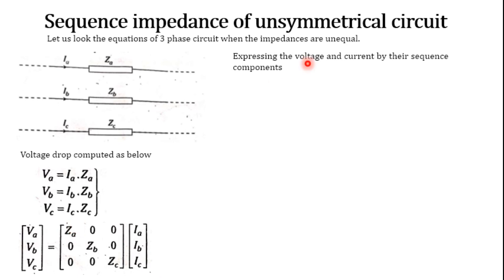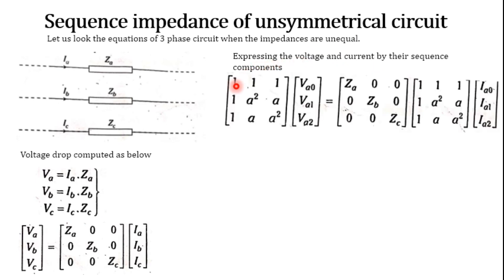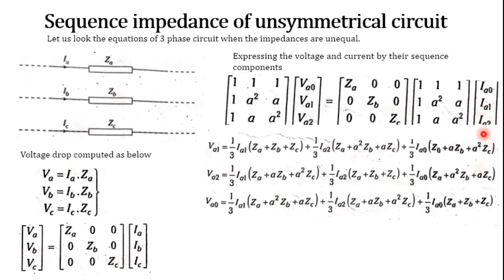Expressing the voltages and currents in terms of sequence components — VA, VB, VC as [1 1 1; 1 a² a; 1 a a²] times [Va0, Va1, Va2], and the currents similarly — and performing the multiplication, we get for VA1: it equals (1/3)·IA1·(ZA + ZB + ZC) plus (1/3)·IA2·(ZA + a²ZB + aZC) plus (1/3)·IA0·(ZA + aZB + a²ZC). Similar expressions hold for VA2 and VA0.